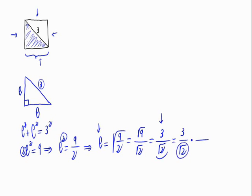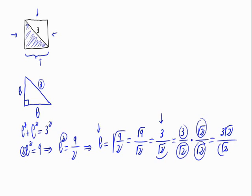So, rationalizing this fraction, as we have a square root on the denominator, it would be 3 divided by the square root of 2, times the square root of 2 divided by the square root of 2. This would be 3 times the square root of 2 divided by the square root of 2 squared, which equals 3 times the square root of 2 divided by 2.